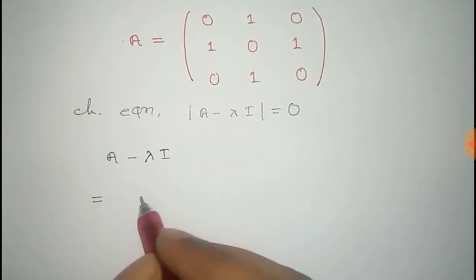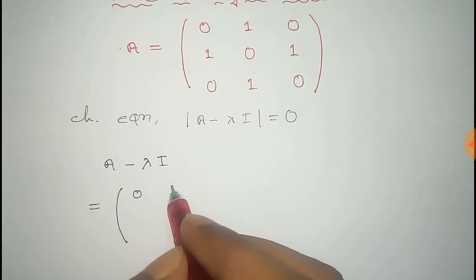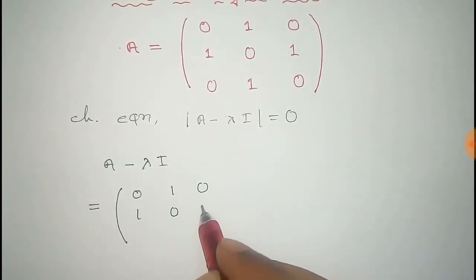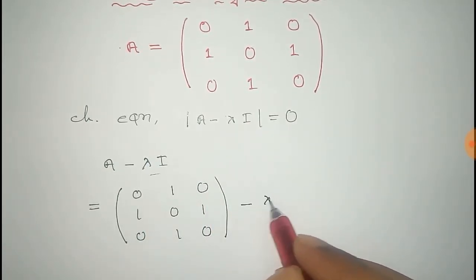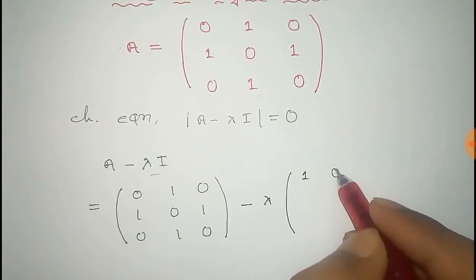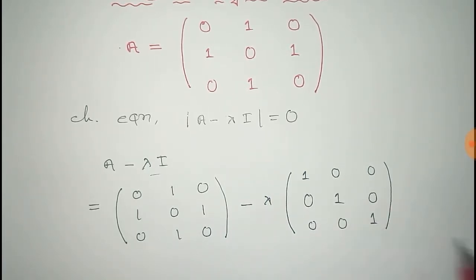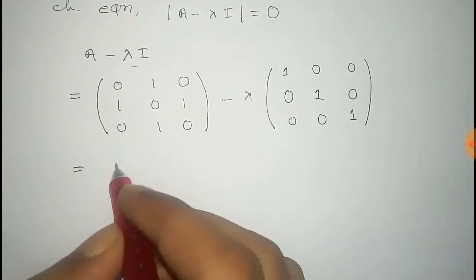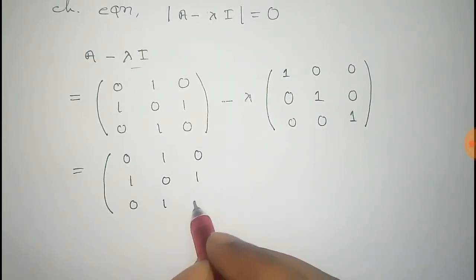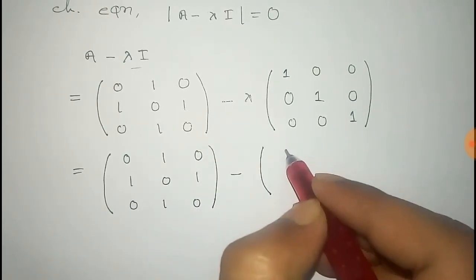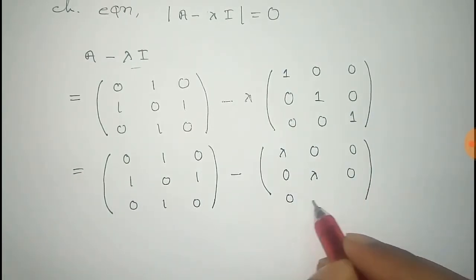That equals to the value of the A matrix. So, put this matrix there: 0, 1, 0, 1, 0, 1, 0, 1, 0. Minus lambda into the identity matrix, which is: 1, 0, 0, 0, 1, 0, 0, 0, 1.